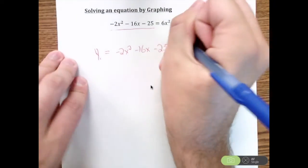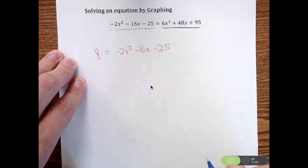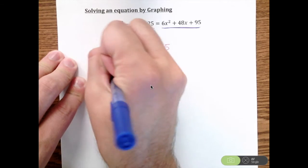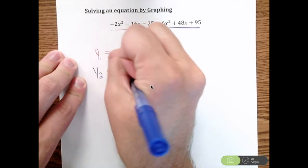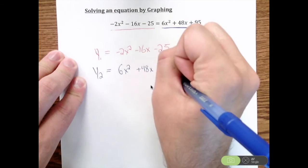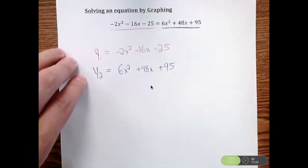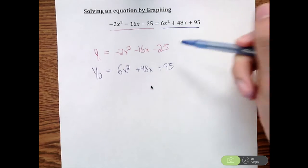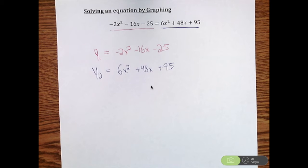And then I'm going to take the right side, and I'm going to make this my y2. So y2 is 6x squared plus 48x plus 95. I'm going to take each of those, and I'm going to plug it into my calculator.